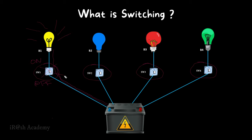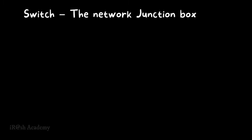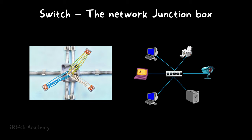This is a simple example of switching. The basic definition of switching is to forward data from one place to another. We call a switch a network junction box because it performs the function of a network junction box — providing centralized connectivity to all nodes. In the same way, a switch provides connectivity to all devices in a network: computers, laptops, servers, IP cameras, printers, and more.